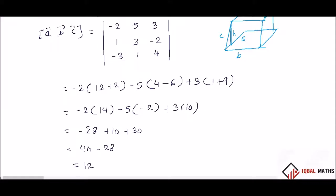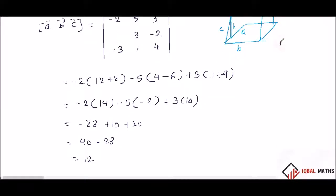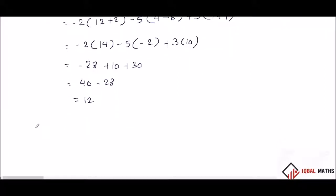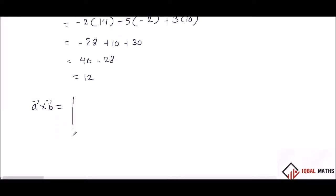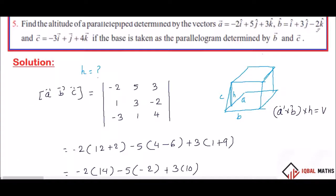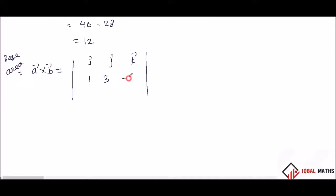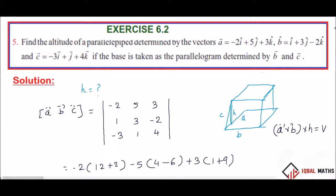So, what I have said is that base area into h is volume. Base area is the modulus of a cross b. We have to set a cross b and multiply the height. General formula: volume equals modulus of a cross b, into height. So we set up the cross product with i vector, j vector, k vector. A cross B is the base area. B is equal to 1, 3, minus 2. Then C: minus 3, 1, 4.